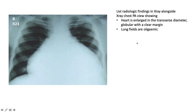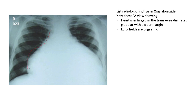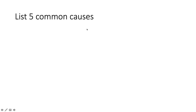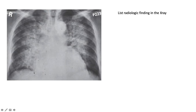Here we see a large globular heart with oligaemic lung fields — this is probably a pericardial effusion. Five common causes in our setting: TB, pericarditis (following acute pericarditis, sometimes virally mediated), lymphoma, malignancy, collagen diseases, and myxoedema.